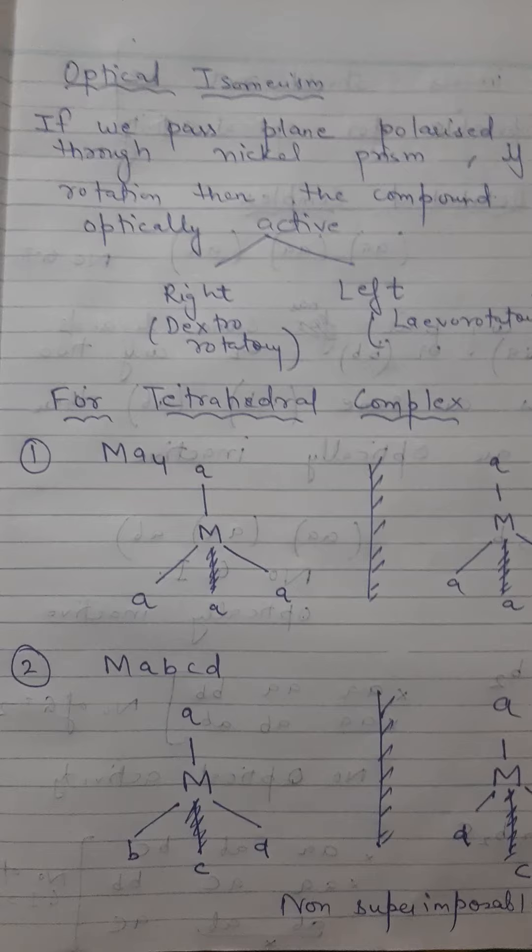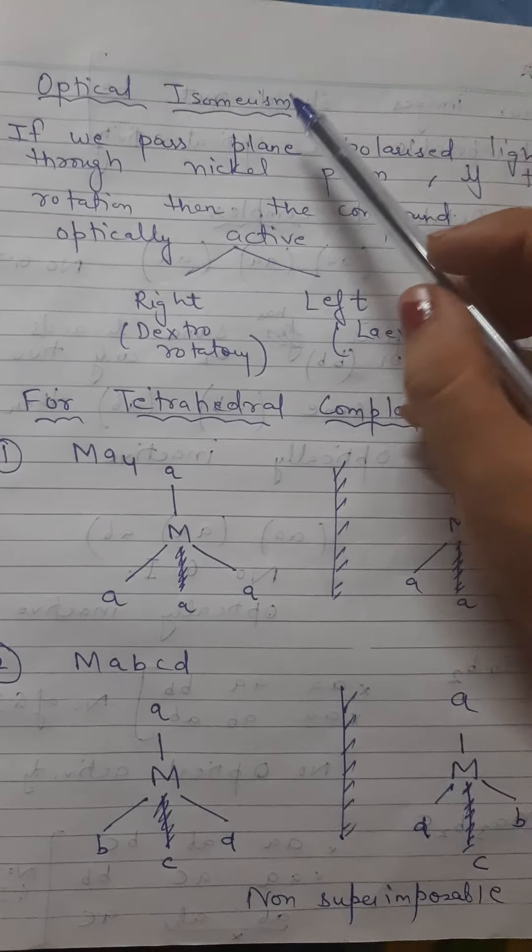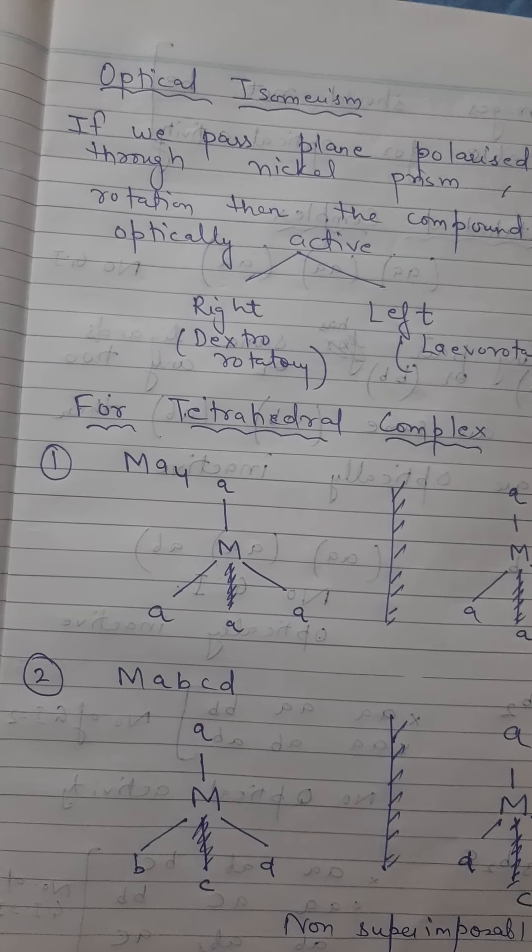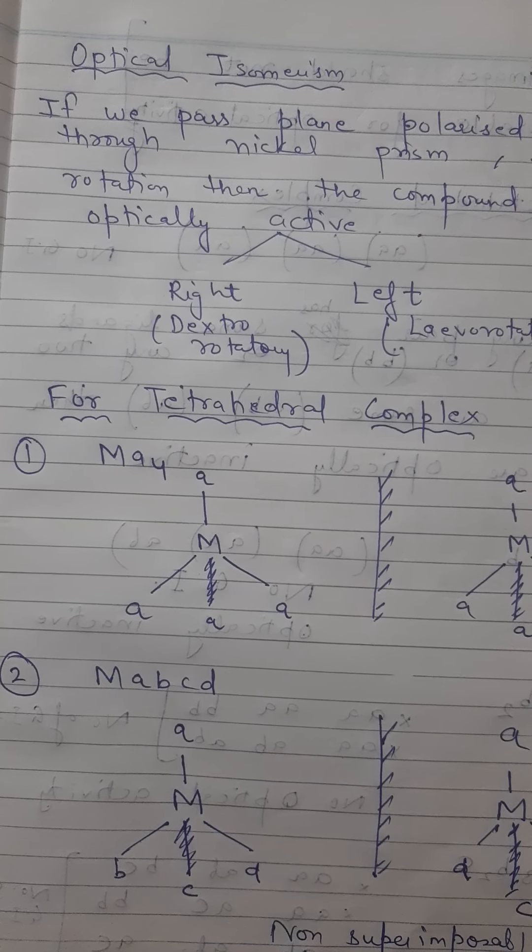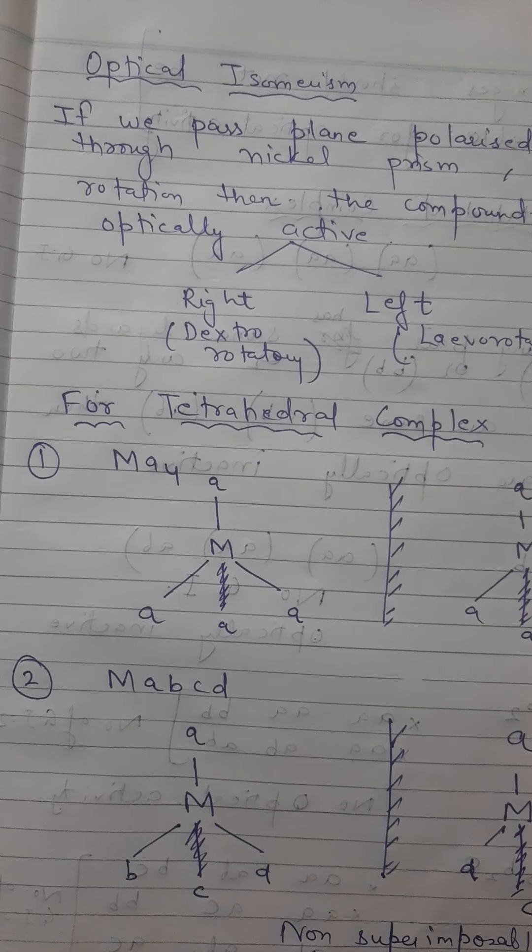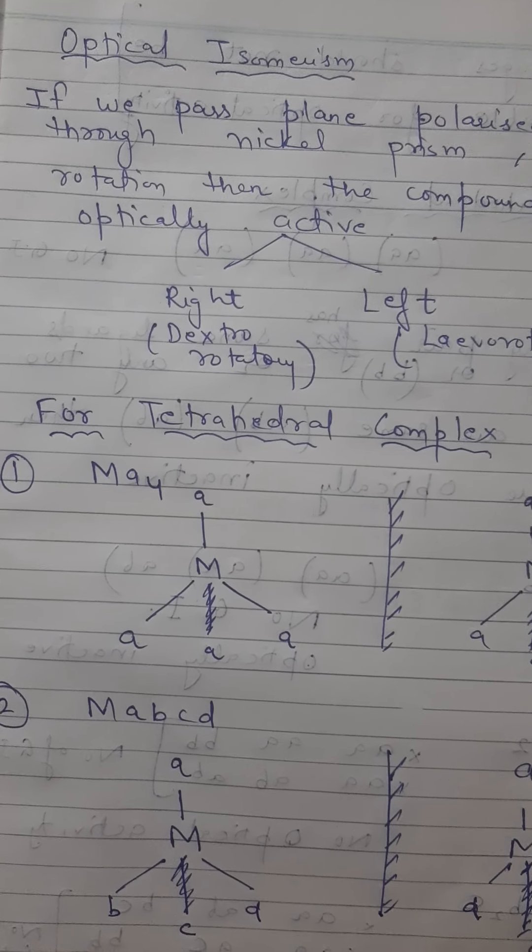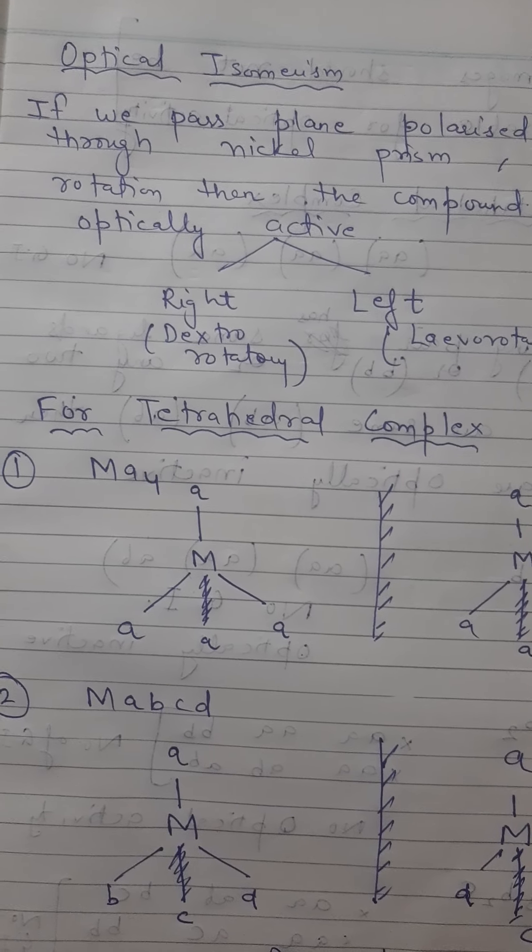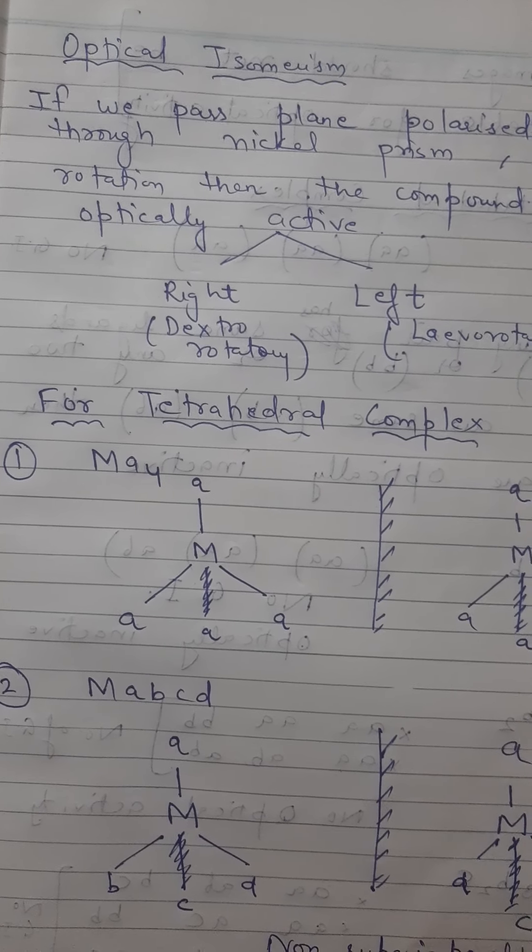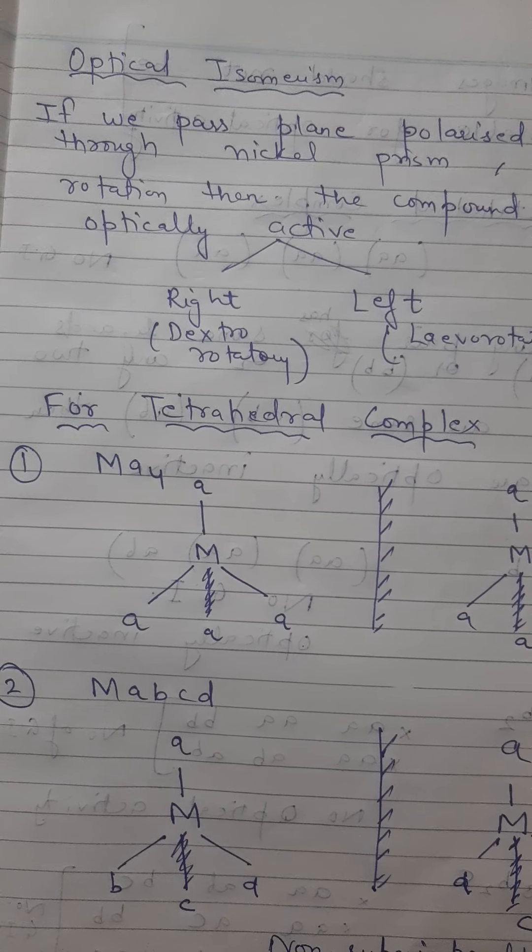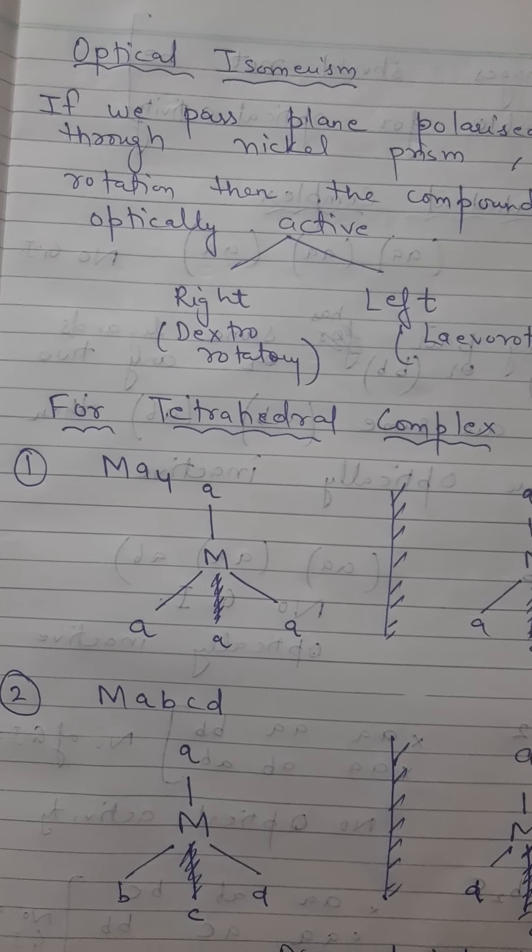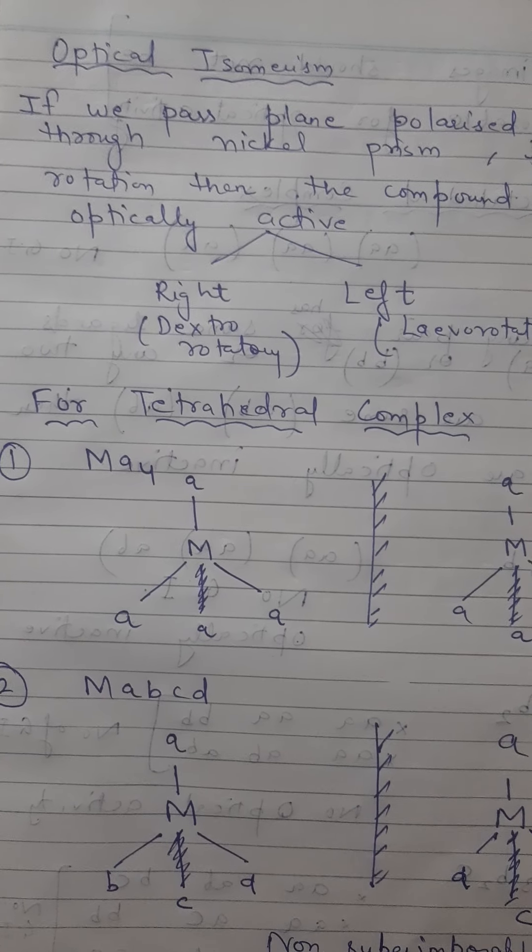If I talk about optical isomers, first of all, what is optical isomerism? If we pass plane polarized light through a Nicol prism, if the rotation is observed, then the compound is optically active. Two types are right and left. If the rotation is right, then it is dextrorotatory. And if the rotation is left, then it is levorotatory.